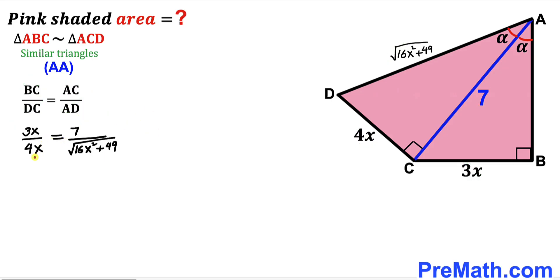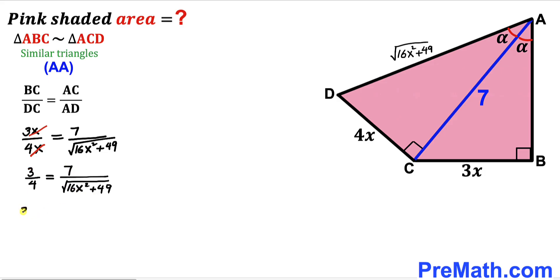Now we can see this x and this x cancel each other out as you can see in this next step. And now we are going to cross multiply, so therefore we get 3 times √(16x² + 49) equals 28 divided by 3.